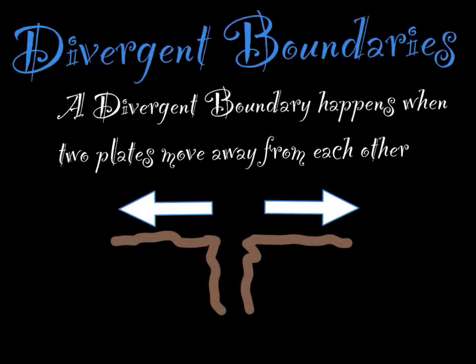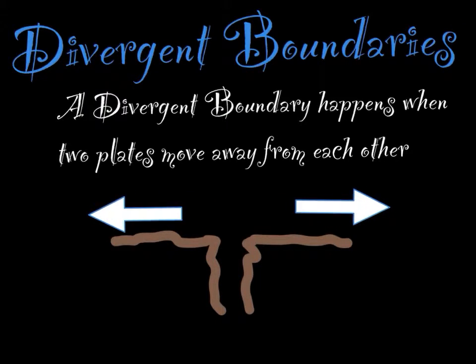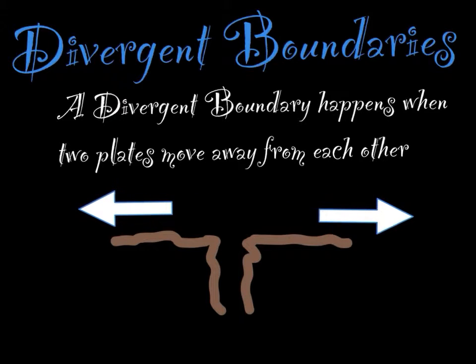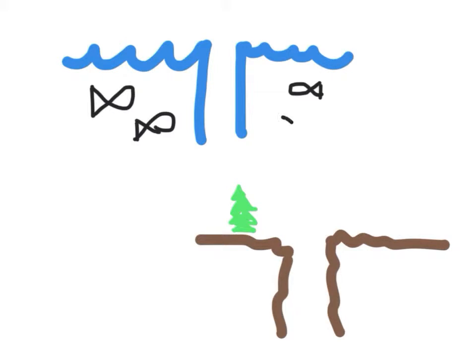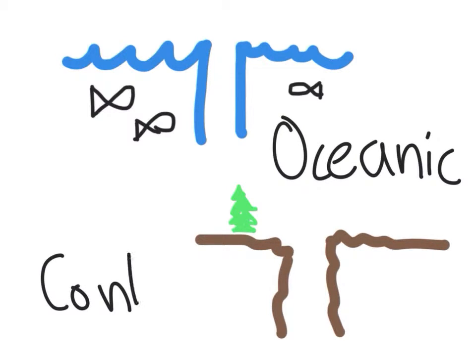Divergent boundaries happen when two tectonic plates move away from each other. There can be oceanic-oceanic boundaries or continental-continental boundaries.